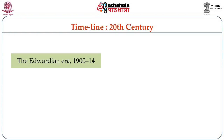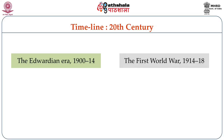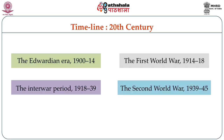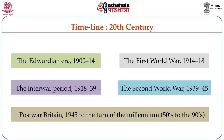The first one is the Edwardian era, stretching from 1900 to 1914. The second one, the First World War, took place during 1914 to 1918. The interwar period from 1918 to 1939 constitutes the third part of that century. Then the Second World War was waged between 1939 and 1945. Post-war Britain from 1945 to the turn of the millennium, stretching from the 50s to the 90s, makes an interesting reading and offers interesting insights.